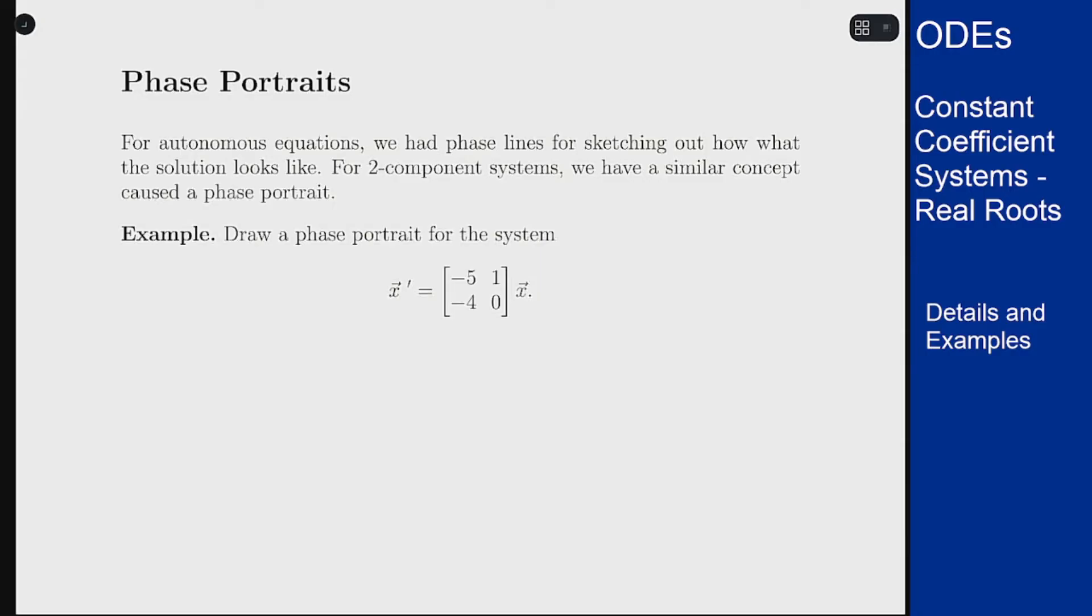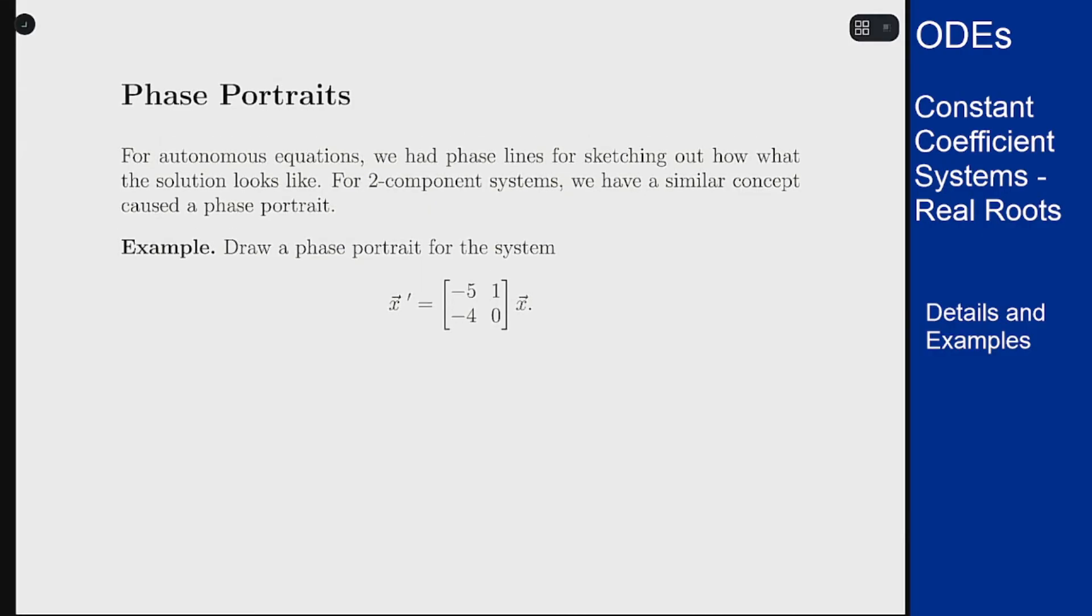In the case of autonomous equations we had phase lines. This is the idea of drawing a little axis and marking out the equilibrium solutions, then putting arrows between based on where things are going up or down, and using that to classify what's going on with this sort of equation.